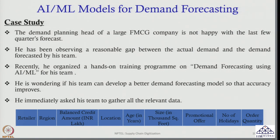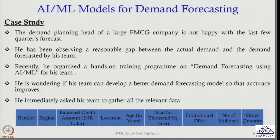Number of holidays also plays an important role. If in that particular week, along with Saturday and Sunday, you have one more holiday, then obviously customers will go out and buy the product, so demand might increase during that time period. The last parameter is order quantity. From past data for each retailer, how much order has come — based on that past data, I need to find out what would be the order from a particular retailer. So for each retailer, the demand planning team is planning to capture: region, balanced credit amount, location, age, size of the retail store, promotional offer, and number of holidays.